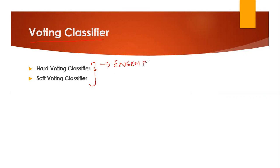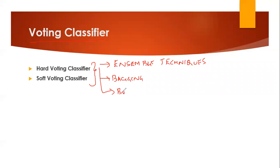I hope everybody has heard of ensemble techniques. If you have not, I've already created many videos on that, please go and have a look. In ensemble, you basically have two types — one is bagging and the other one is boosting. In bagging, I've already discussed about random forest. In boosting, I've already discussed about XGBoost.